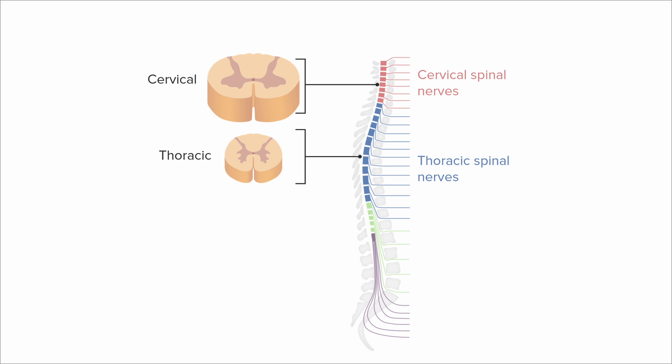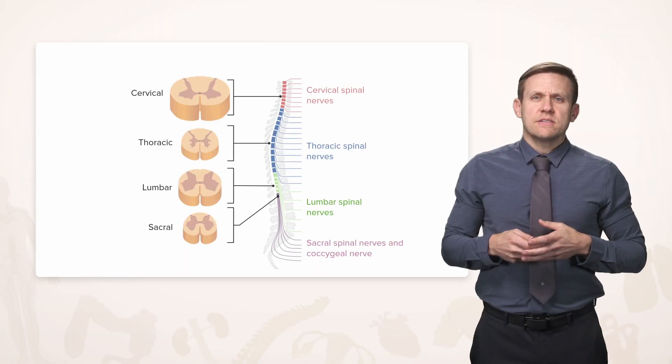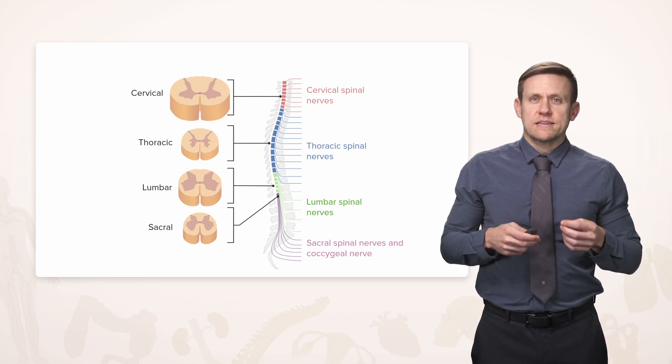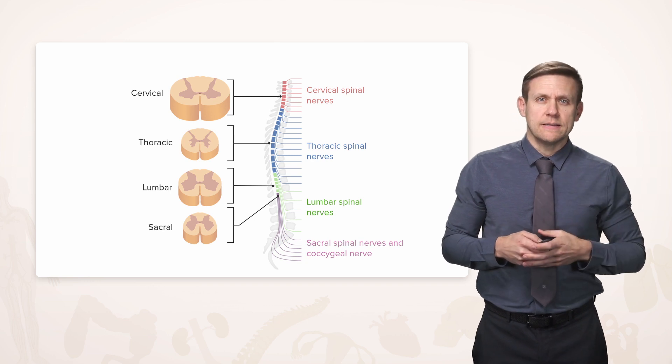Similarly, we have lumbar nerves in the area of the lumbar spine. And then by the time we get to the sacral area, they are, of course, just individual nerves. It's not really the spinal cord anymore, but we have sacral nerves in the area of the sacrum. And then there's a single coccygeal nerve down by the area of the coccyx, which is the smallest, most terminal portion of the vertebral column.